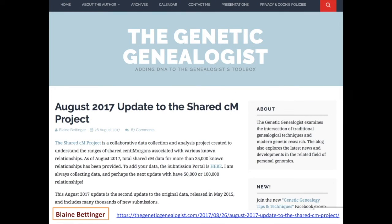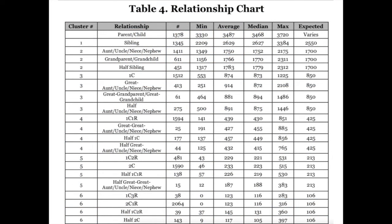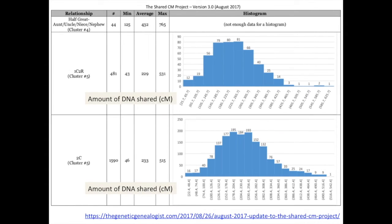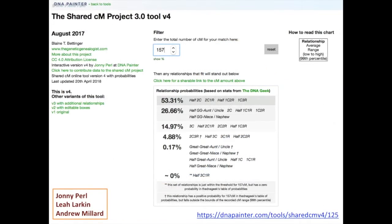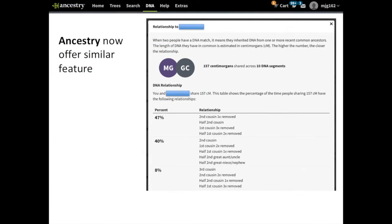Blaine Bettinger, the genetic genealogist, did a very important project on 25,000 known relationships, calculating the minimum, maximum, and average amount of centimorgans for each relationship from siblings all the way down to sixth and seventh cousins, including removed and half relationships. He demonstrated this using frequency distributions and histograms showing the spread of DNA for any given known relationship — these are not normal distributions but skewed towards the right. Johnny Pearl took this further and invented an online tool where you enter the amount of DNA shared — for example 157 centimorgans — and it immediately gives you a range of possible relationships. This was later adopted by Ancestry.